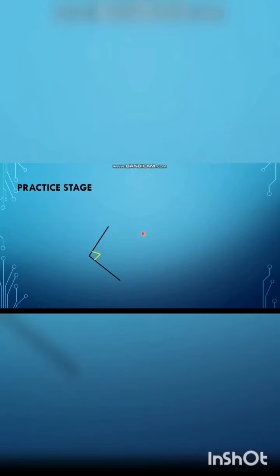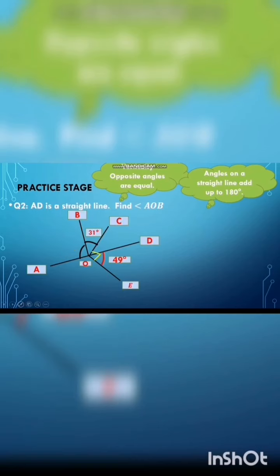These three concepts will be used in finding unknown angles. We have question number two from our textbook, page 254. AD is a straight line. Find angle AOB. If we take AD as a straight line, we have one angle of 31 degrees. First, we find angle COD. We have a right angle box, which is 90 degrees, and one part is 49 degrees.